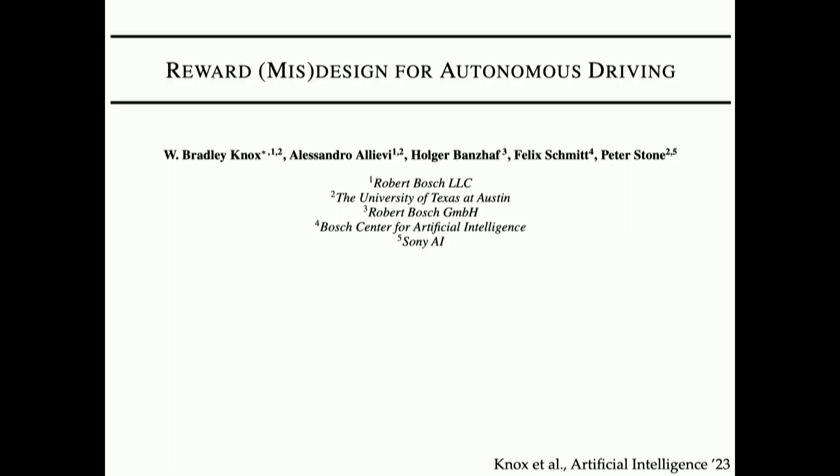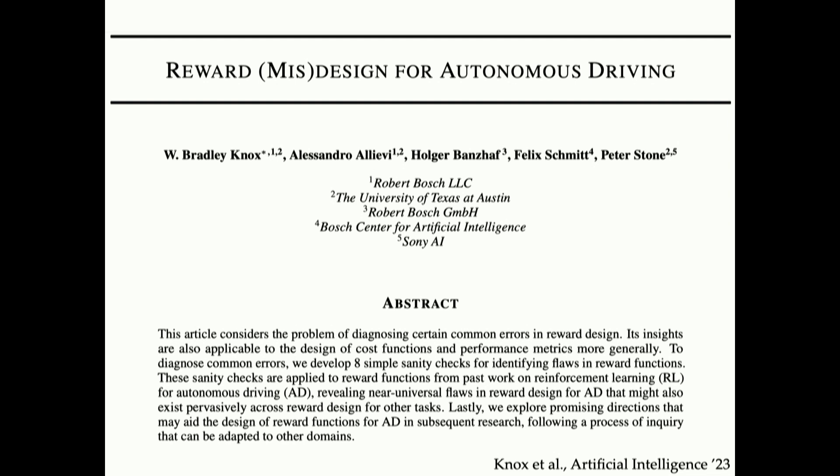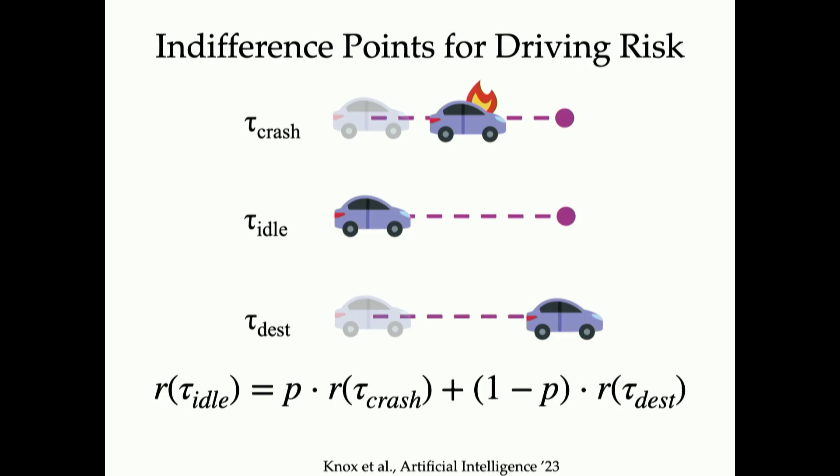This also shows up in scenarios with autonomous driving. Here's a paper from 2023, very recent, by Knox et al. It looks at reward misdesign for autonomous driving. Basically what they did was they created a bunch of sanity checks to find flaws in reward functions from the literature. And then they went and found a bunch of reward functions that were being used and applied these tests. I want to walk you through one of them.